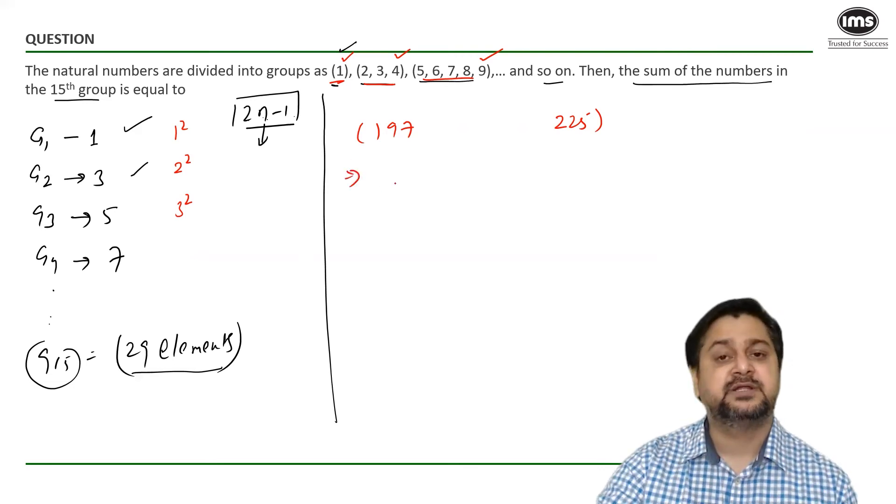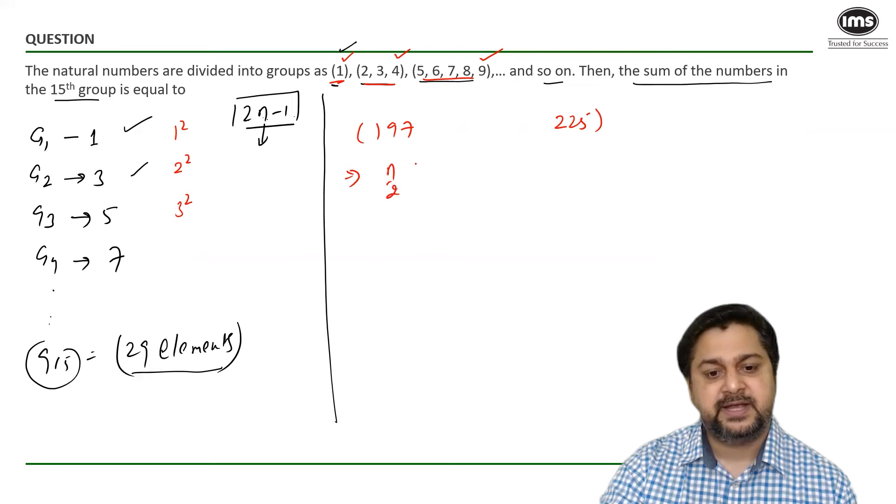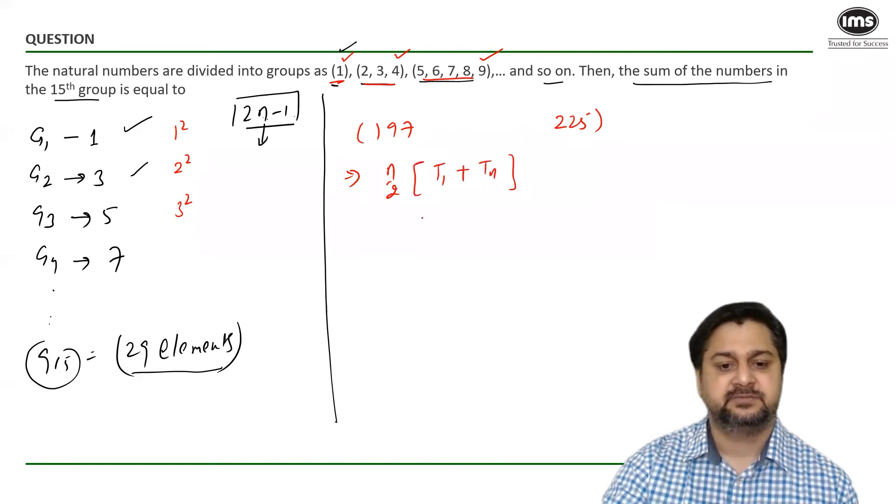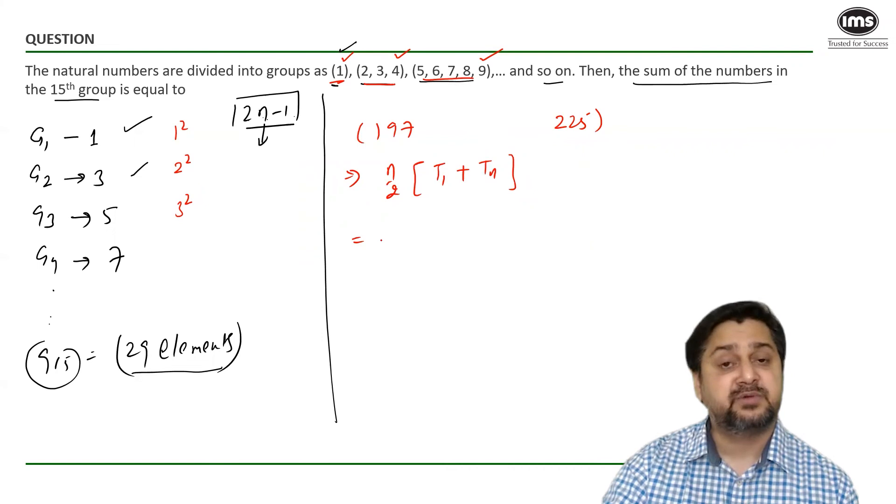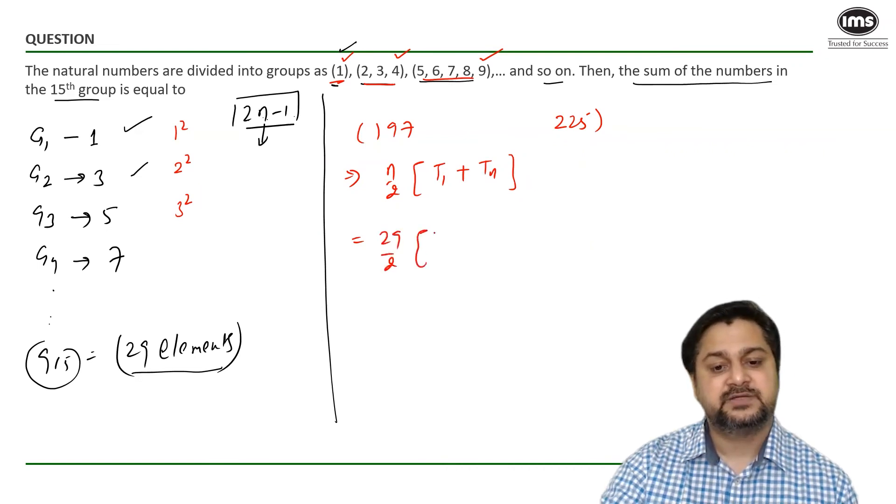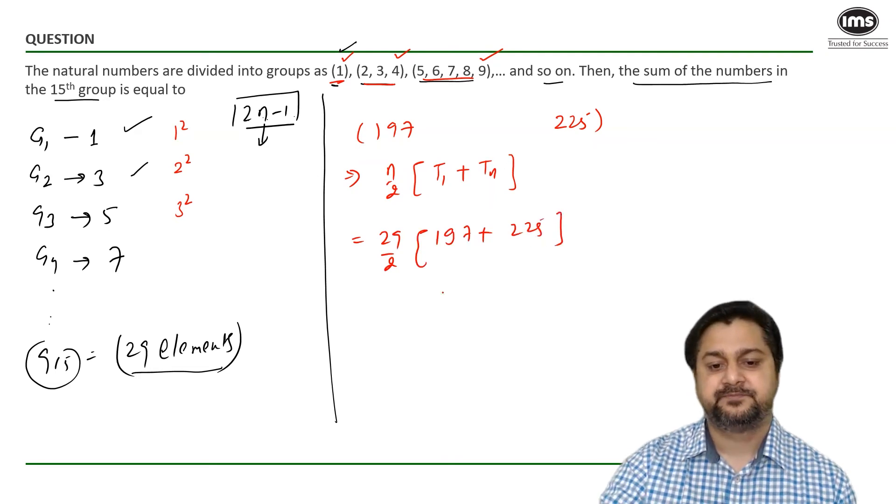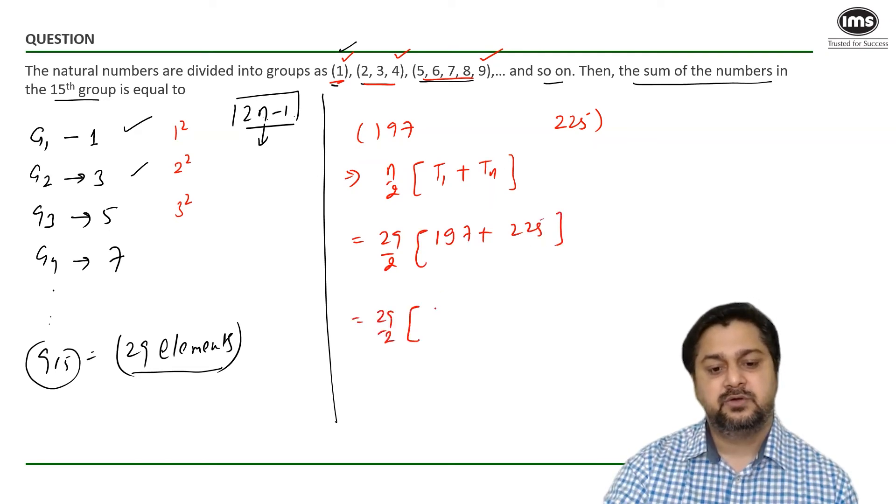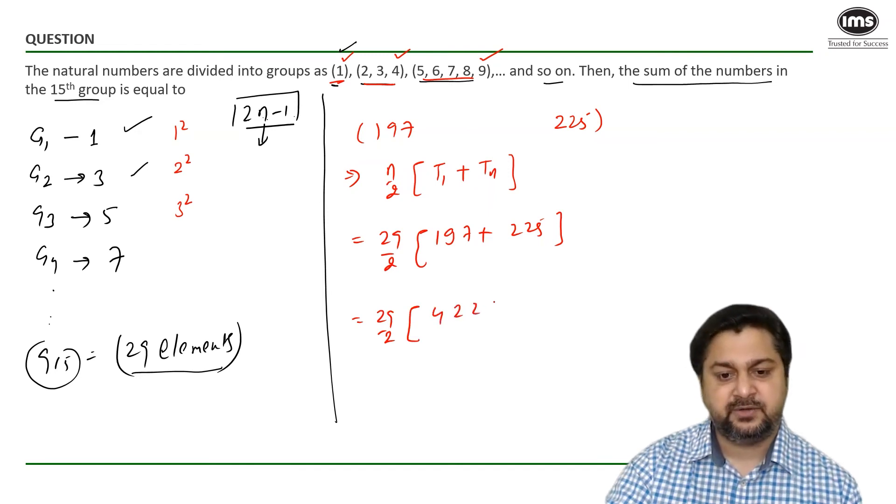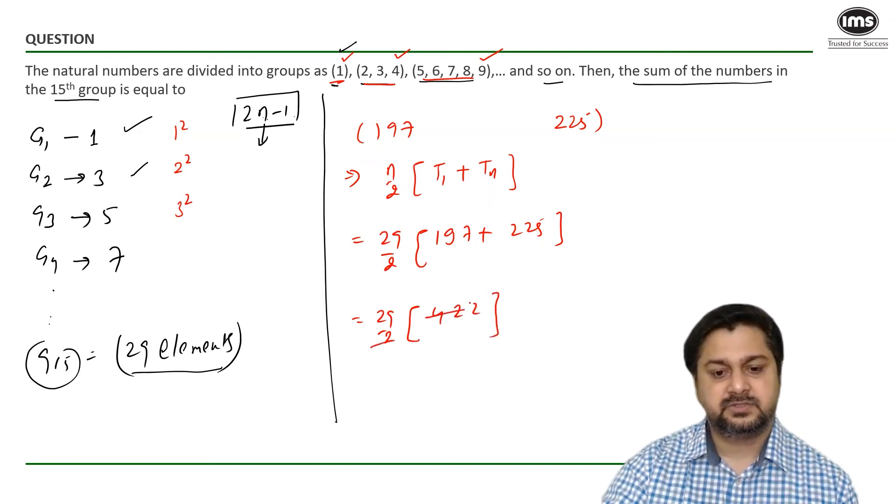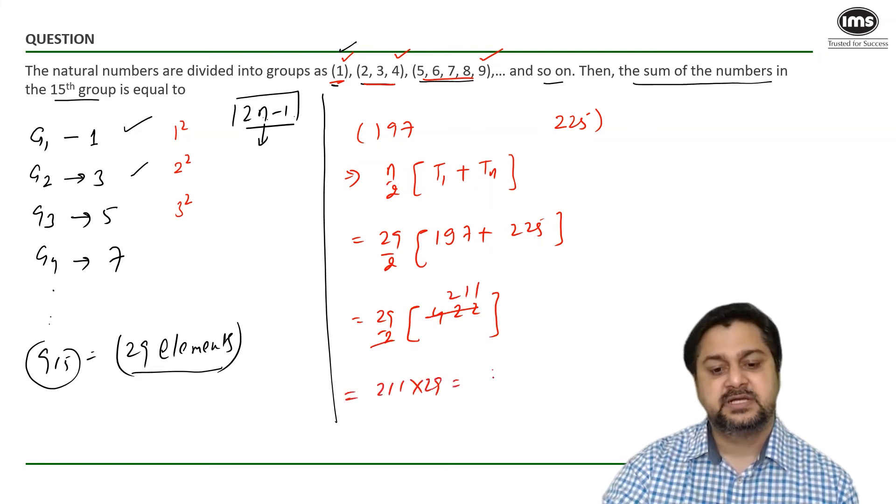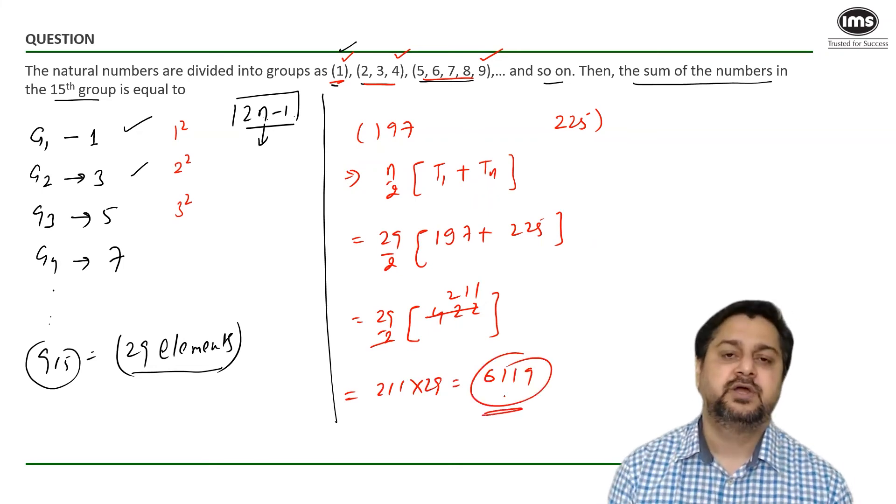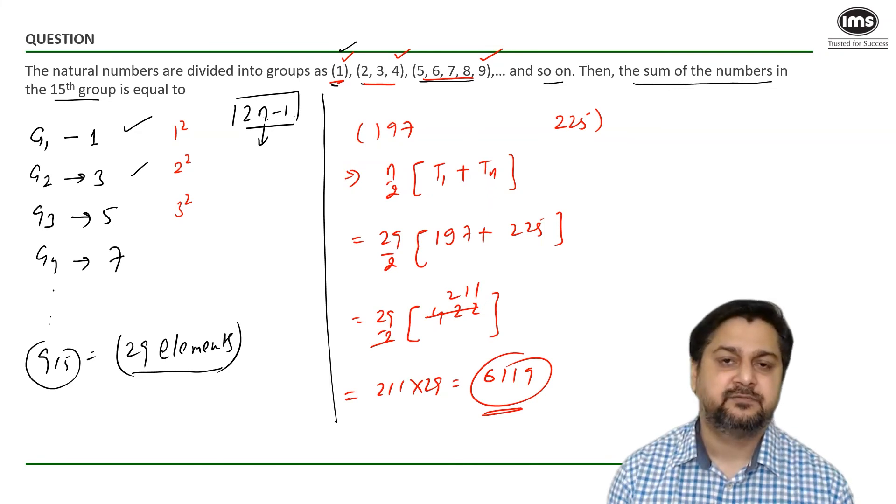So what is the general formula to find out the sum of an AP? It is n by 2 into first term plus the last term. So what is n? The total number of elements is 29. What is the first term? 197. Last element, 225. That looks like 29 by 2 into, this is 422. So 211. So 211 times 29 would give us 6119. That is the sum of those elements in group number 15.